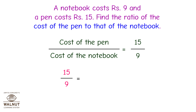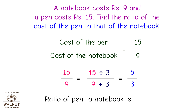We can keep reducing this fraction as long as there are common factors. We divide the numerator and denominator by 3 and we get 5 upon 3. Can we divide this fraction further? No. So the ratio of the cost of the pen to that of the notebook is 5 is to 3. That is the answer.